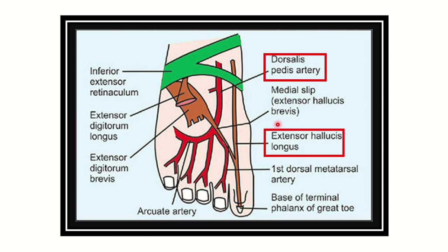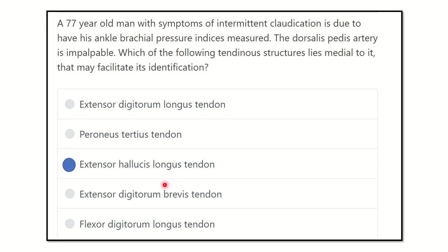In this additional picture, we can again see the dorsalis pedis artery, with the extensor hallucis longus tendon on one side and the extensor digitorum longus tendon on the other. So the dorsalis pedis artery is located between these two tendons — extensor hallucis longus medially and extensor digitorum longus laterally. Our final answer is that the extensor hallucis longus tendon is located medial to the dorsalis pedis artery.